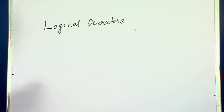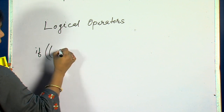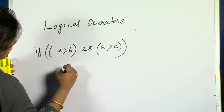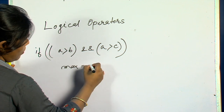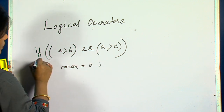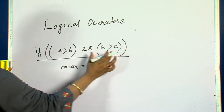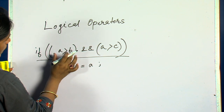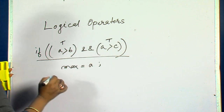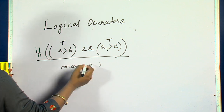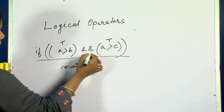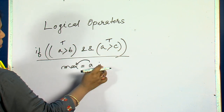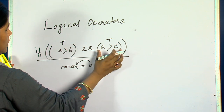For example, suppose the condition is: if A is greater than B AND A is greater than C, then the maximum value is stored in the variable max. Both these conditions must be true for the assignment to happen. In logical AND, both conditions should be true; if one condition is false, the whole expression is false.